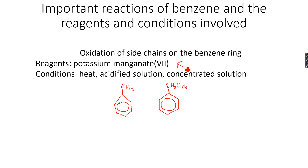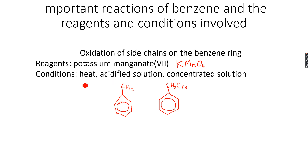Instead of writing potassium manganate in full, you can just write KMnO4 to save time. You can write: a concentrated acidified solution of KMnO4 along with heat. When we use these reagents with methyl benzene or propyl benzene, we get the following result.